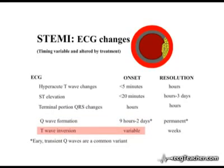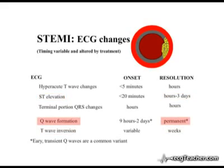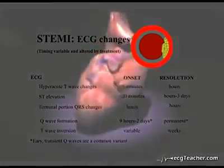T wave inversion may be seen in the affected leads at a variable time point following occlusion. While ST segment elevation generally resolves within days and T wave inversion within weeks, late pathological Q waves are a permanent marker of MI on subsequent ECGs. However, the presence of Q waves should not be used to time the onset of an MI as early transient Q waves are a common variant. We will now go on to discuss the identification of the culprit vessel in ST elevation MI.